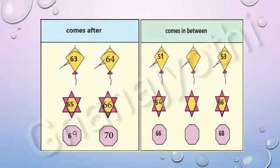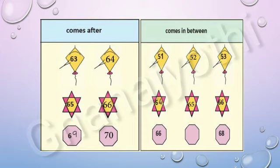Now, let us look at between numbers. Look at the first picture — they have given the numbers 51 and 53. The number between 51 and 53 is 52. Look at the second picture — they have given the numbers 64 and 66. The number between 64 and 66 is 65. Look at the third picture — they have given the numbers 66 and 68. The between number for 66 and 68 is 67.